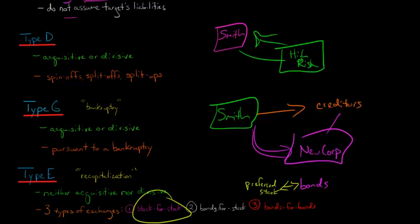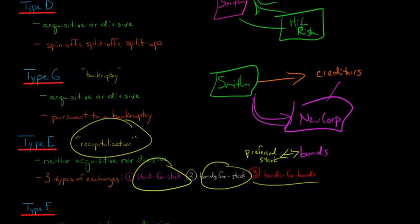You could give stock for stock, you could have bonds for stock, you could have bonds for bonds. There's several different ways it can go, but basically, you're not acquiring a new company, and so you're basically just recapitalizing the firm.